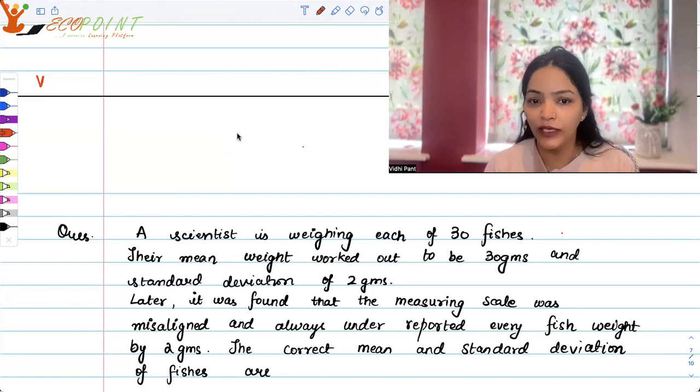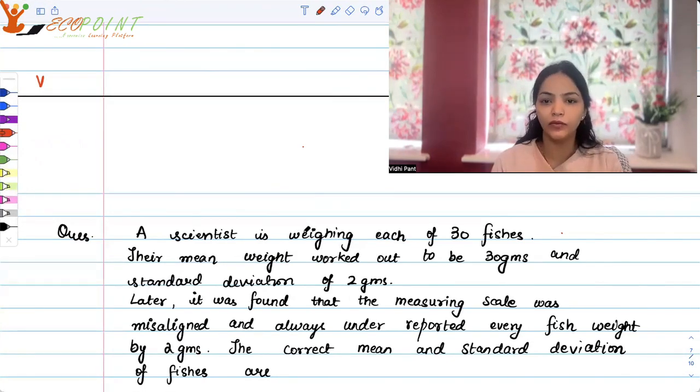A scientist is weighing each of 30 fishes. Their mean weight worked out to be 30 grams and standard deviation of 2 grams. Later it was found that the measuring scale was misaligned and always under reported every fish weight by 2 grams.